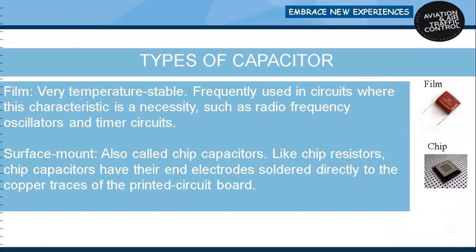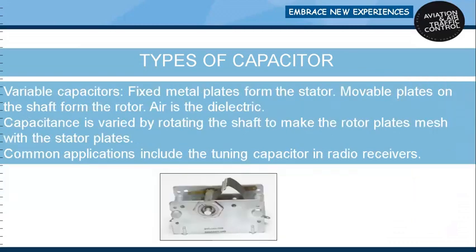Surface mount capacitors, also known as chip capacitors, have end electrodes soldered directly to the copper traces of the PCB circuit. Variable capacitors have fixed metal plates forming the stator and moveable plates on a shaft forming the rotor, with air as the dielectric. Capacitance is varied by rotating the shaft to make the rotor plates mesh with the stator plates. Common applications include tuning capacitors in aircraft radio receivers.